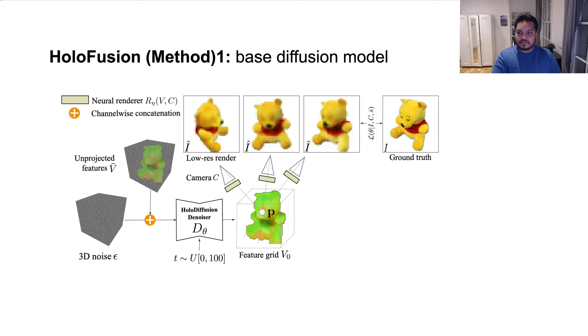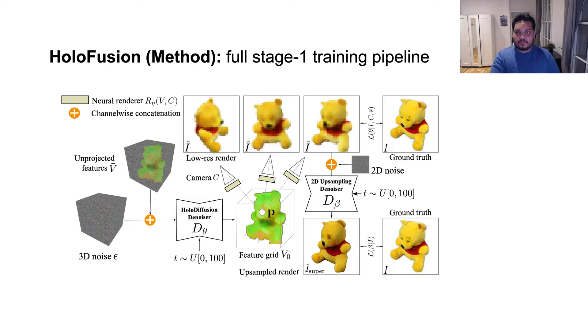The base 3D diffusion model is then augmented with a 2D diffusion model, which super resolves the low resolution views rendered from the output of the base diffusion model. This brings us to the complete training pipeline. We call this first baseline HoloDiffusion star.